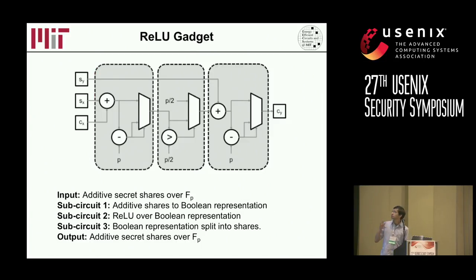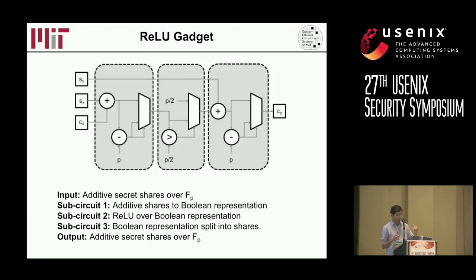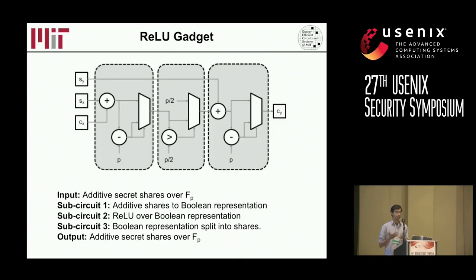I'll briefly walk through the ReLU gadget. In addition to computing the ReLU, the gadget needs to recombine the secret shares to get back the value, perform the ReLU computation, and then remake those shares. The key point to notice is that all these operations are linear in the size of the inputs, whereas some of the linear algebra computations are not linear — for example, a matrix-vector multiplication is O(n²). This is asymptotically why this kind of approach gives the speedups we've seen.